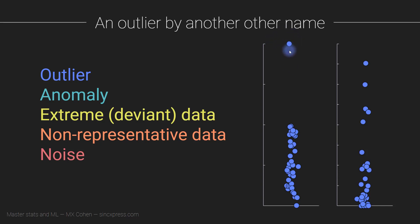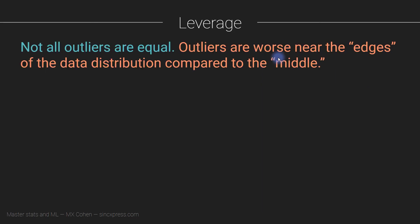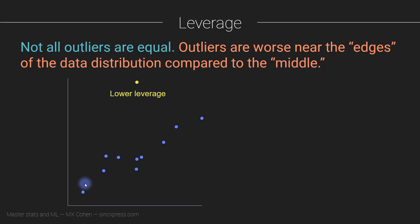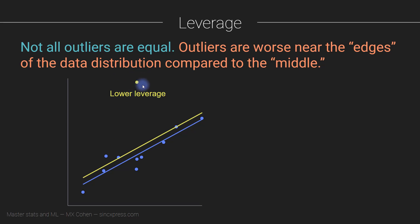That depends on the nature of the outlier and where it is with respect to the other variables in the data set. Here we have some data, and this is another data point up here. This data point is actually not going to have such a negative impact on the relationship between these two axes. You can see why looking at this line — these are the best-fit lines that go through the data points to identify a trend. The blue line is without the outlier, and the yellow line includes the outlier. In both cases, the slope — how much these lines increase — is basically the same including and excluding this outlier. So the outlier did shift the entire model up, but it didn't really change the slope. In statistics, we're often more interested in the slope than in just the overall shift on the y-axis. So this outlier is very unusual, but it's not so deleterious for the model fitting.